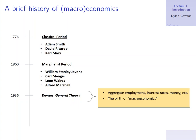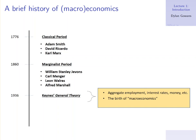What was Keynes interested in? Things like aggregate employment, interest rates, the amount of money in the economy. This was really the birth of macroeconomics. After World War II in 1945, you had this real split into macroeconomists like Keynes, and microeconomists like the marginalists — two different sections of the discipline looking at separate aspects of economics.